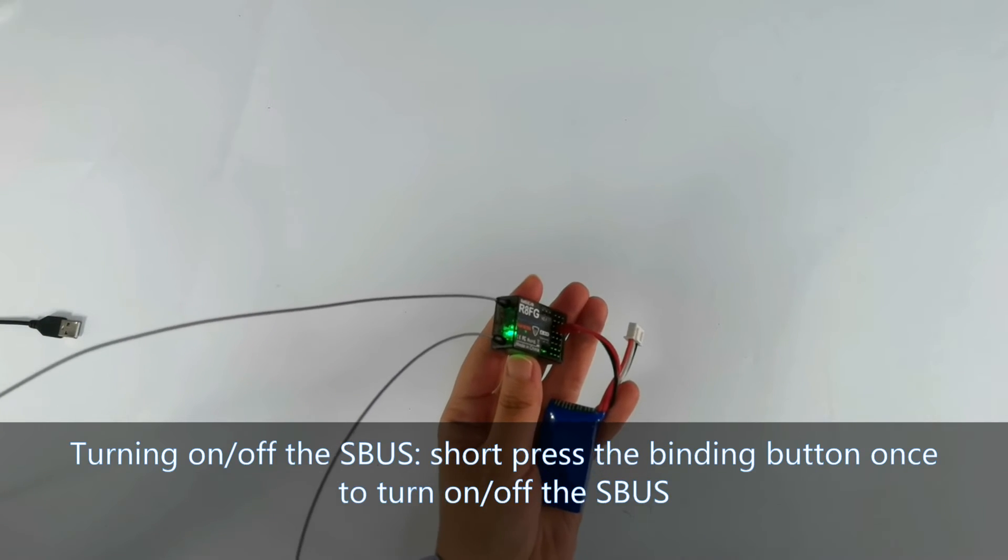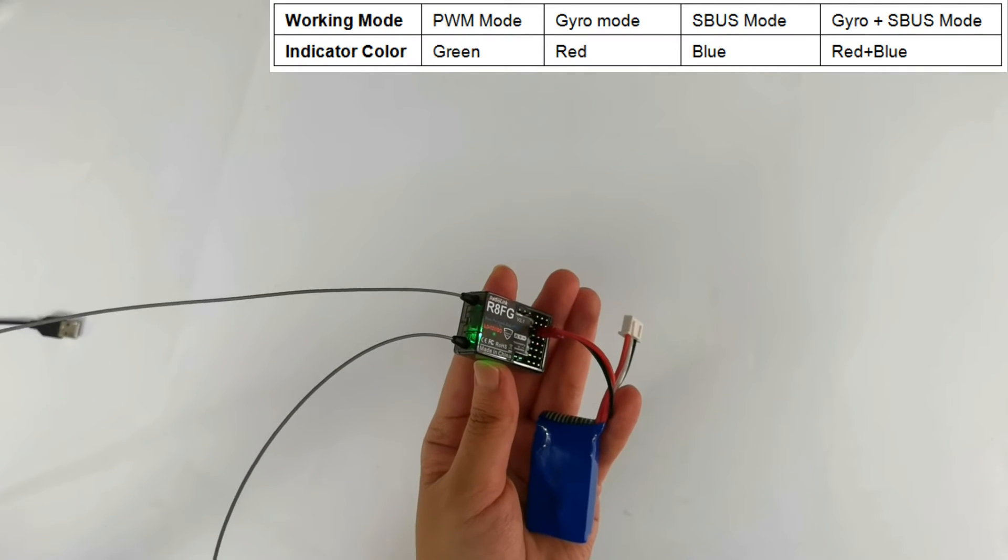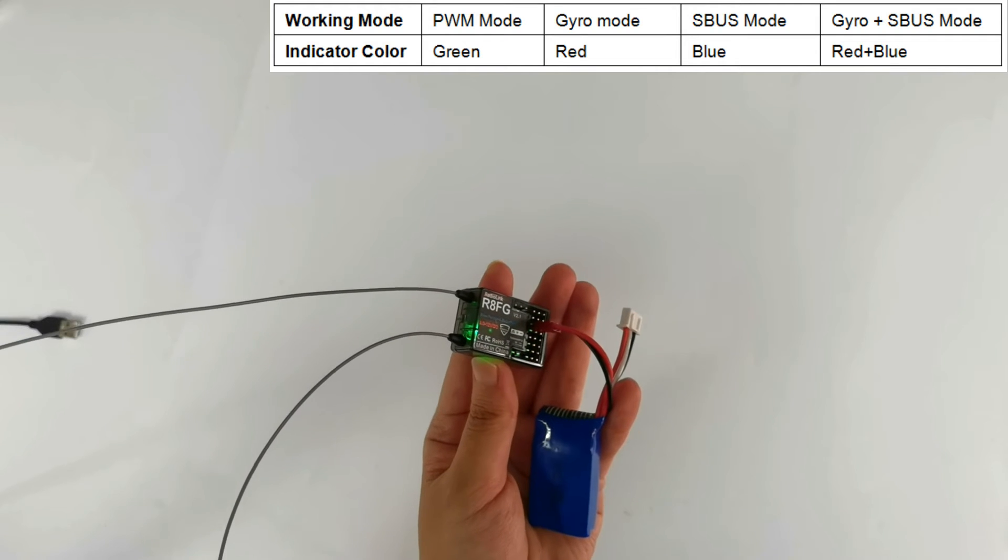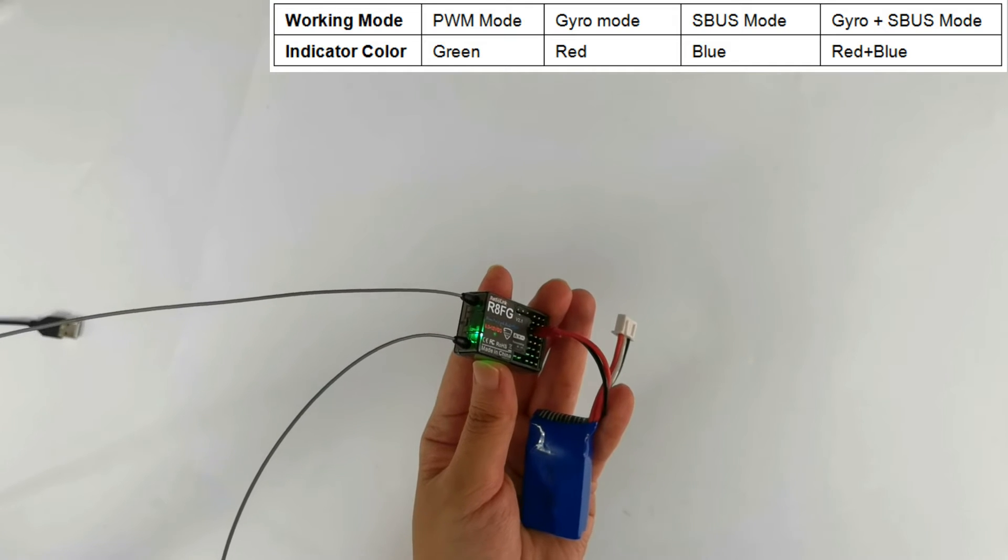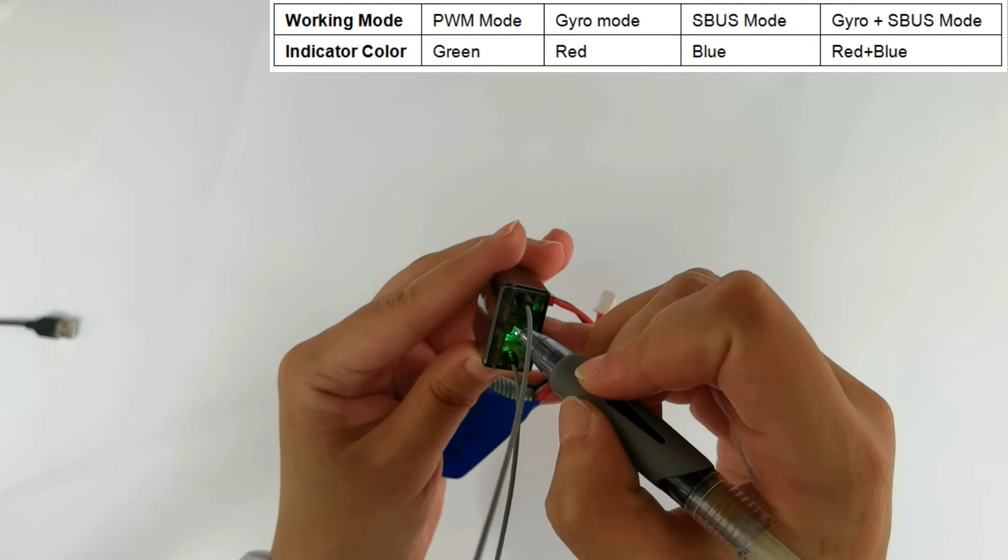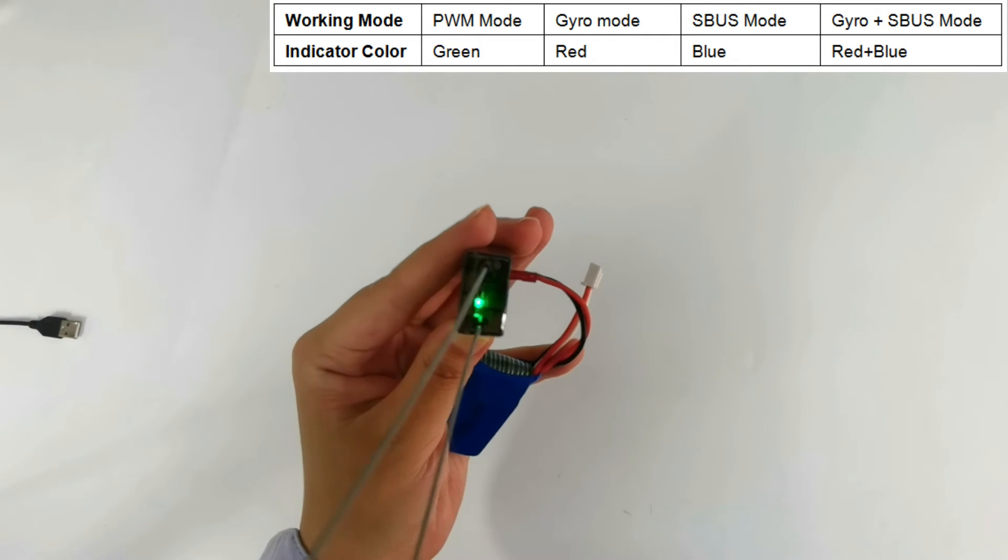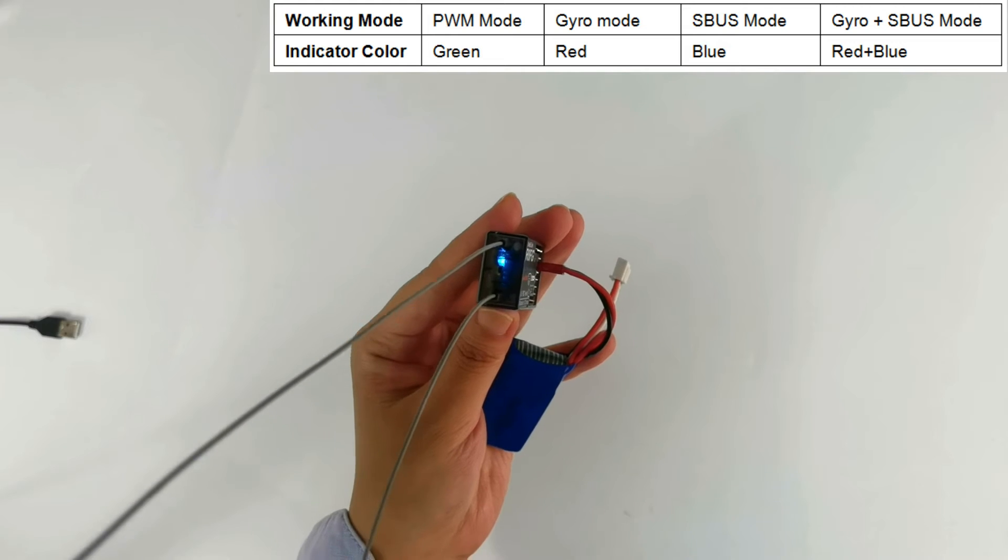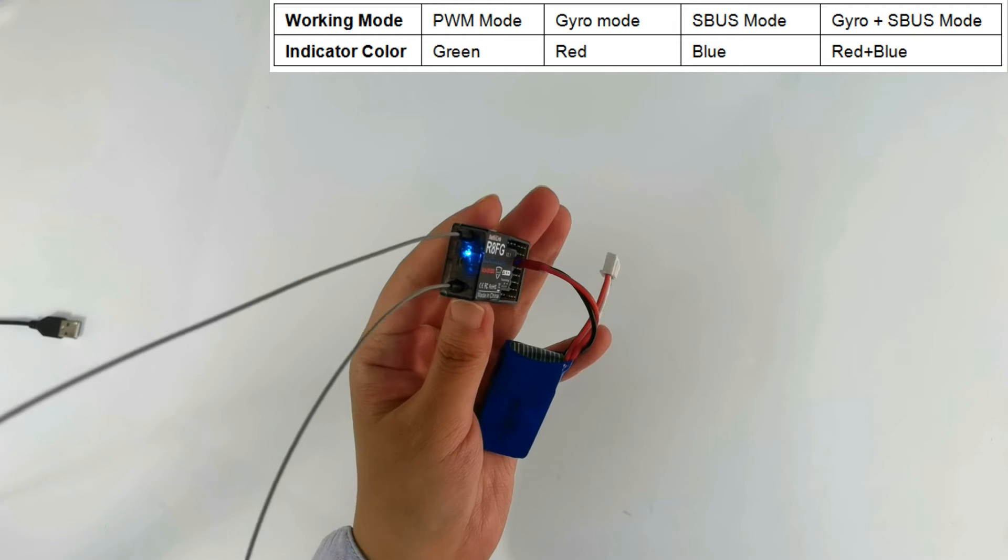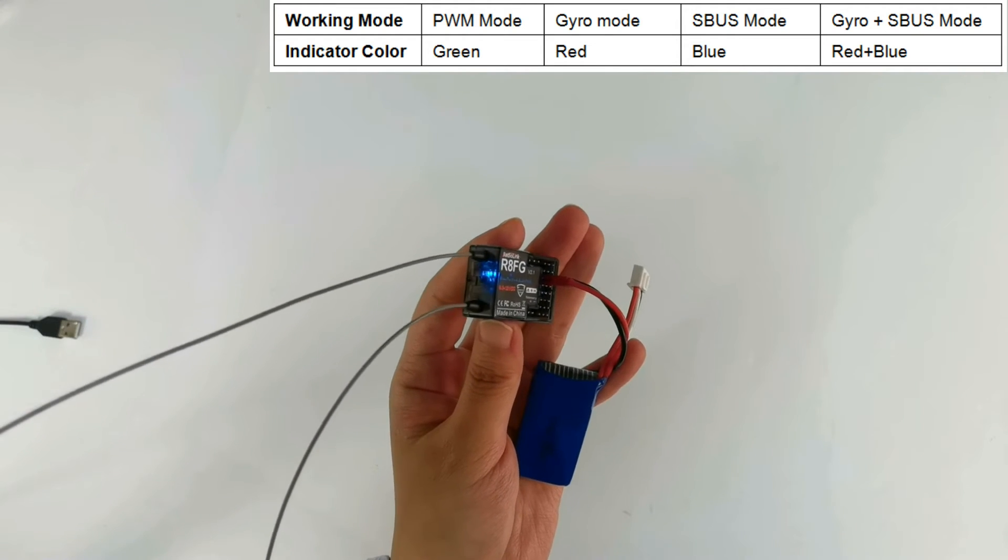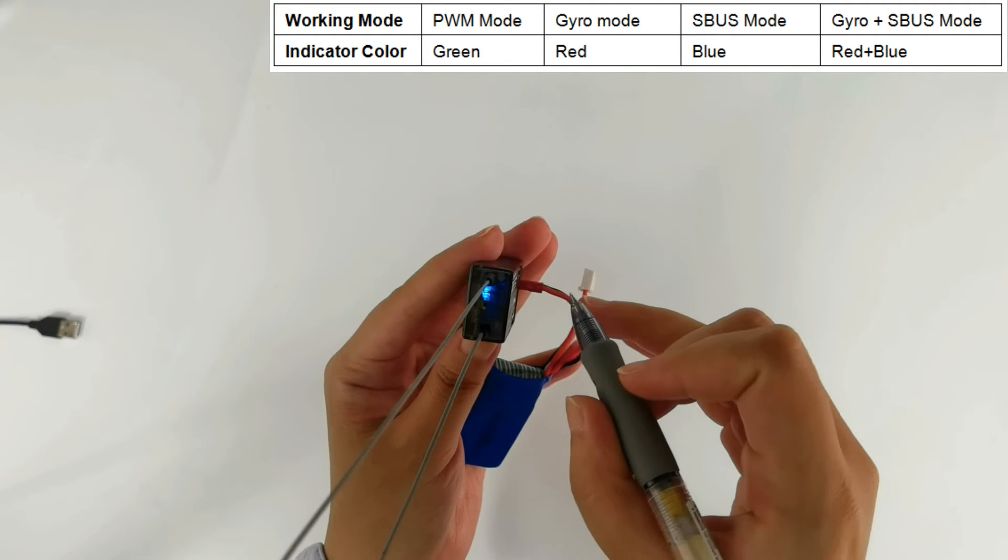Short press the binding button once to turn on or turn off the SBUS. The LED indicator is green, ordinary PWM mode now. Short press the binding button once to turn on the SBUS. Press it once. The color is changed from green to blue, which means it is SBUS mode now. You can press the binding button once again to go back to PWM mode.